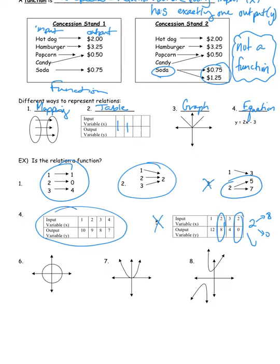Now we move on to examples six, seven, and eight — these are graphs. In graph number six, if I give you an x value, it has a y value up here and another one down here. For example, this might be the point (1, 2) and this one (1, -2). That x value results in two different y values, so number six is not a function. Take a look at seven and eight — what do you think about those?